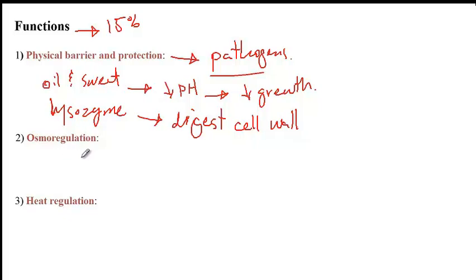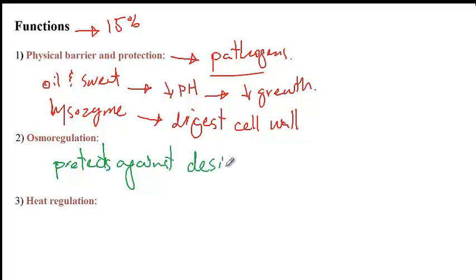The next function is osmoregulation. Because the skin epidermis has a thick and keratinized layer, it is waterproof and protects against dryness and desiccation. At the same time, it also prevents excess water from being absorbed into the body when we are immersed in water — there will be some absorption, but not enough to cause bursting of our cells.